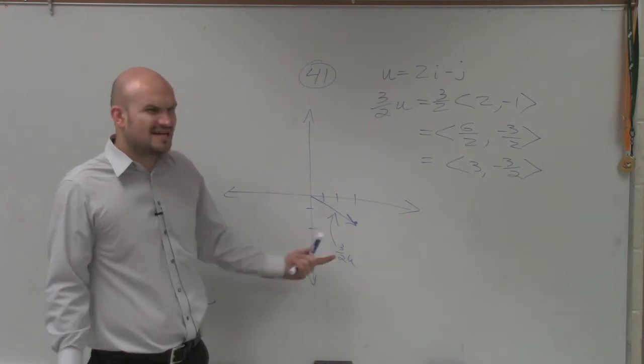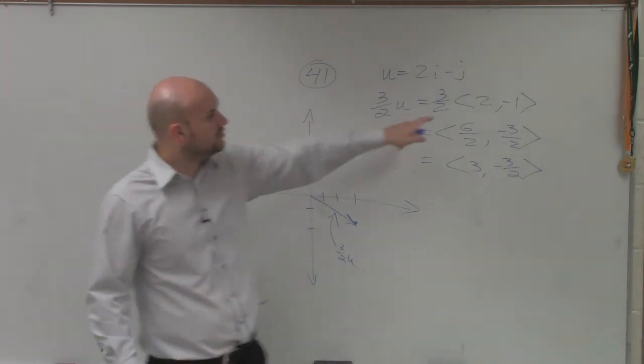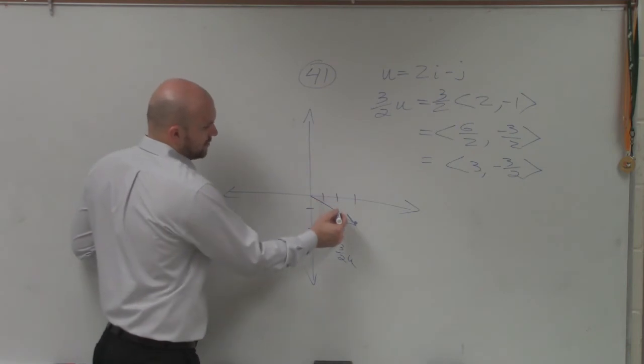So that's 3 over 2u. What does u look like? Well, u is 2, negative 1. So I go over 2, down 1.